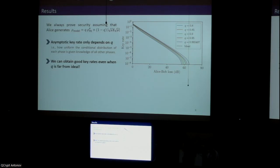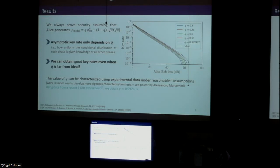Here are the key rates obtainable for several values of q. As we can see, we can still obtain pretty decent key rates even for values of q that are far from ideal, like 0.8, although one may wonder what is the value of q that we expect from actual implementations. I have some good news because in the paper we also show that the value of q can be characterized using experimental data with some reasonable assumptions. Actually, using data from a recent very high speed experiment, we obtained a value of 0.99. If we see the key rate obtainable for this value, it's very close to ideal. This seems to suggest that decoy state QKD with passive randomization is pretty robust against phase correlations.